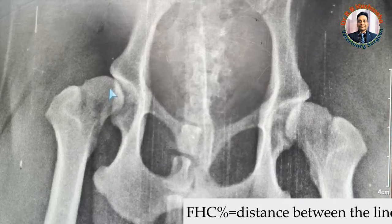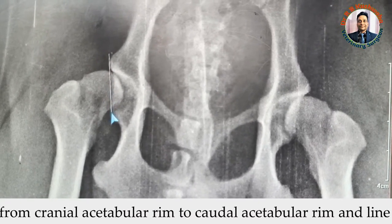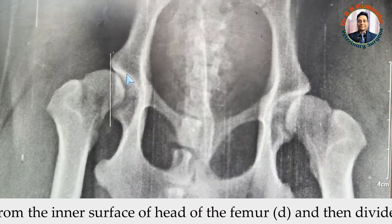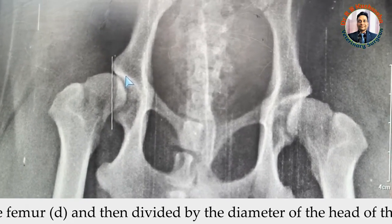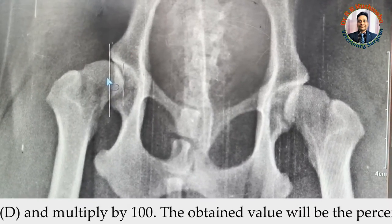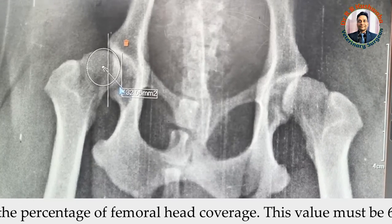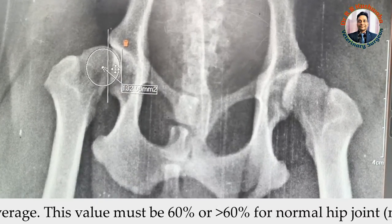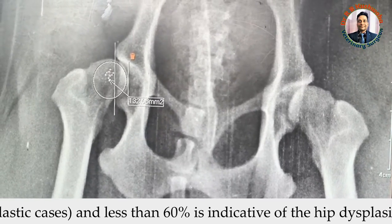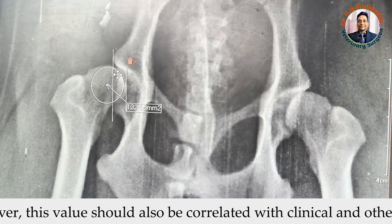For measurement of femoral head coverage, we first draw one line connecting the cranial acetabular rim to the caudal acetabular rim. Then a second line is drawn at the inner surface of the head of the femur. Then we draw a circle to measure the diameter of the head of the femur, centering it at the center of the femoral head.